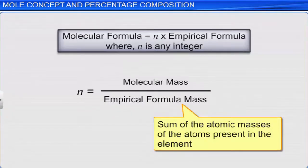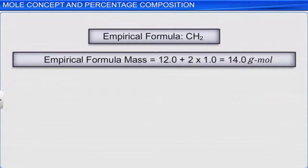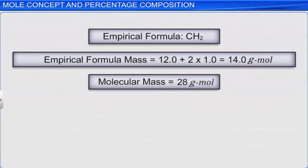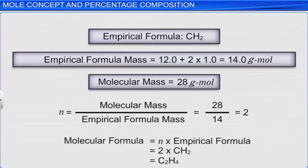Let's say we have a compound CH₂. The empirical formula mass will be the sum of the atomic masses of one carbon atom and two hydrogen atoms, which is 14 g/mol. Now, let's say the molecular mass of the compound is 28 g/mol. Thus, 28 divided by 14 gives us 2. We then multiply 2 by the empirical formula and get C₂H₄.